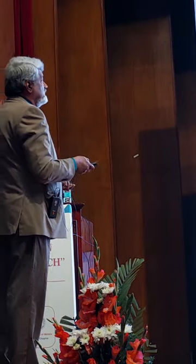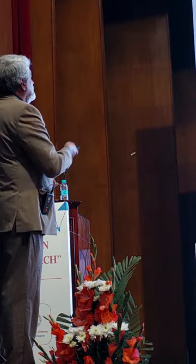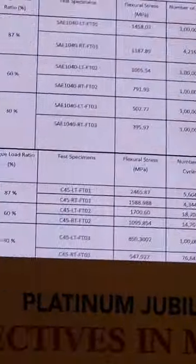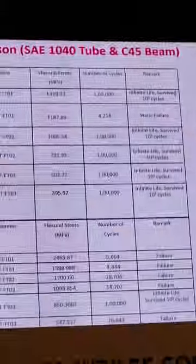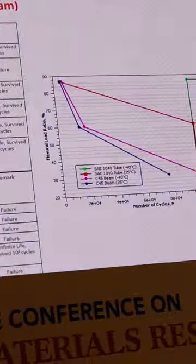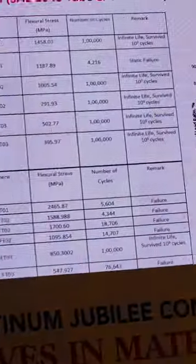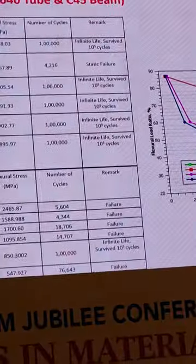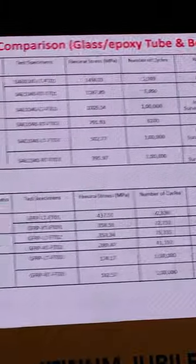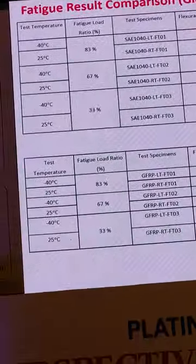The final summary table shows that arrows indicate samples running through 10⁵ cycles without failure, demonstrating the improved fatigue endurance at sub-zero temperatures across all specimen types — steel and glass epoxy tubes and beams alike.